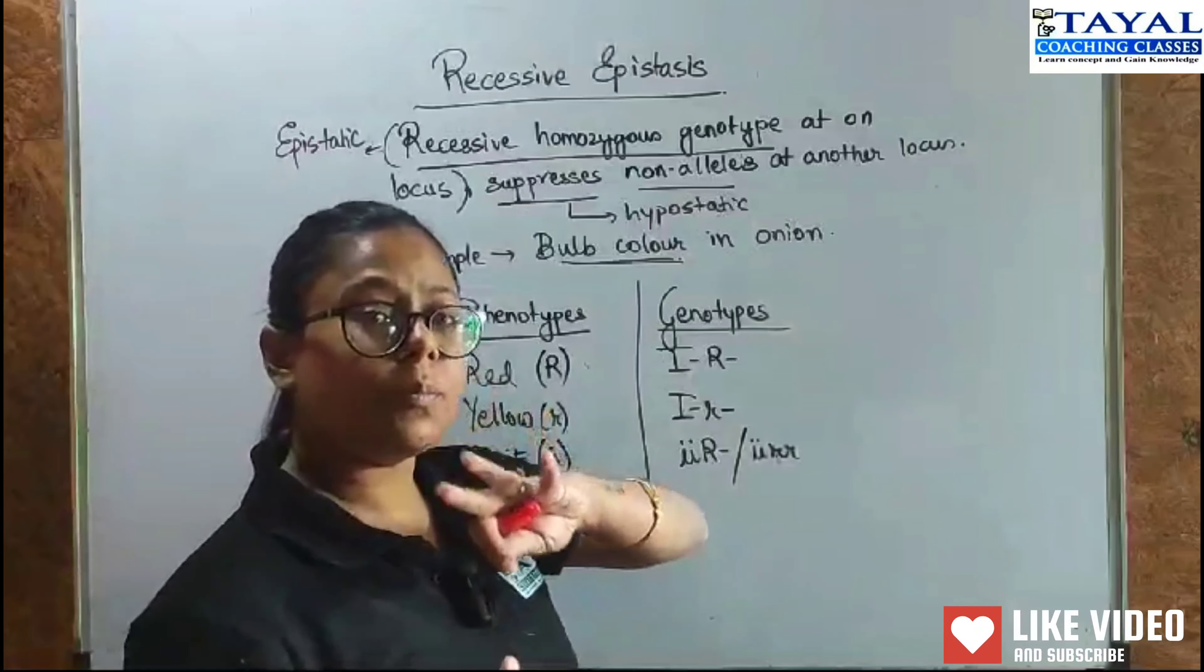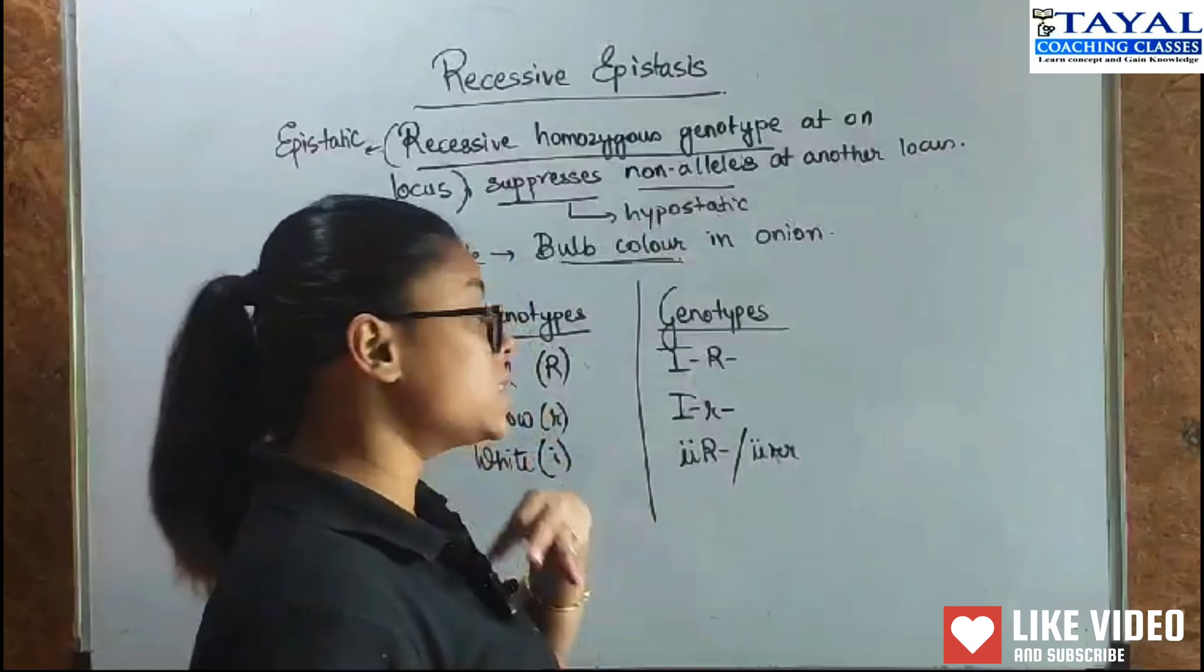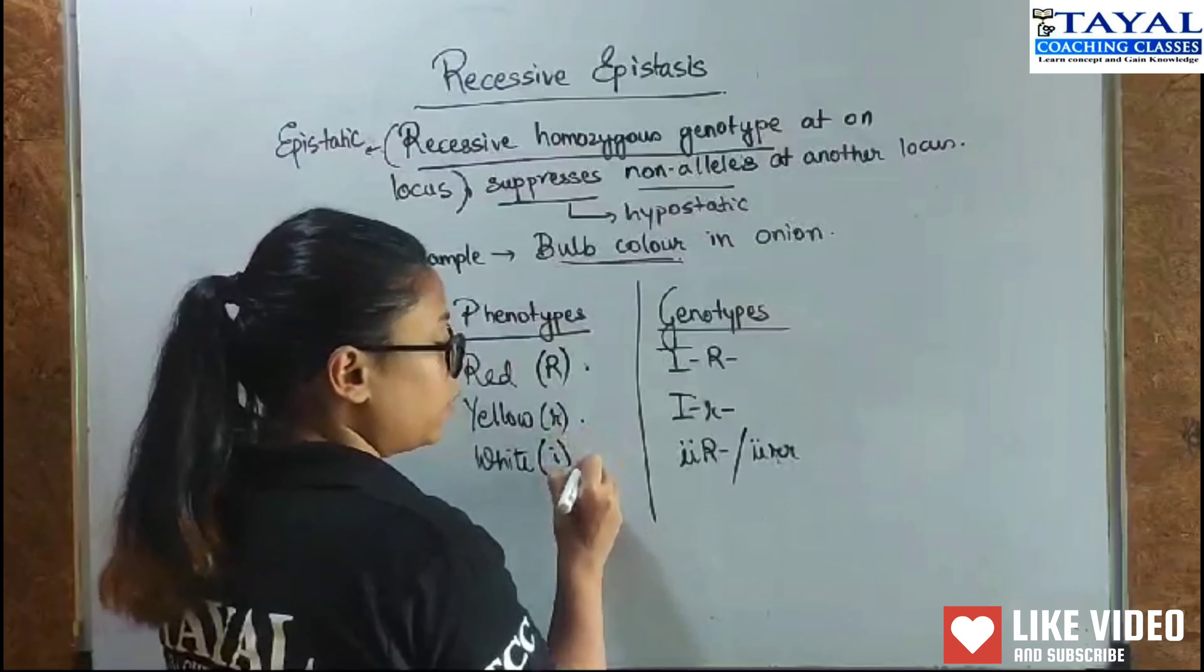In onions, we have three predominant bulb colours that we get. We have red, yellow, and white.